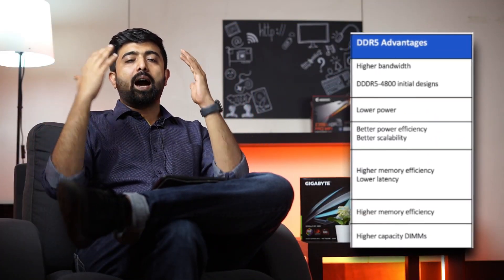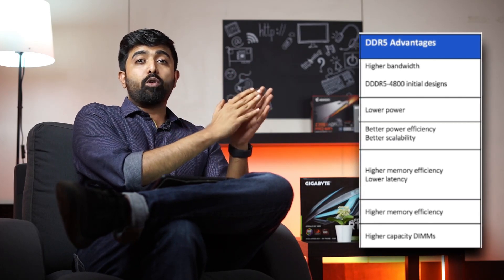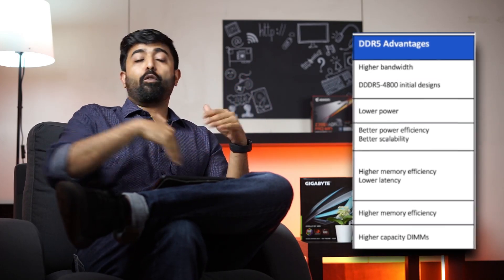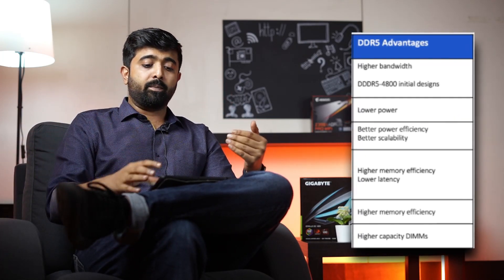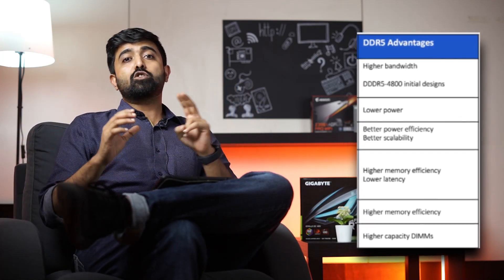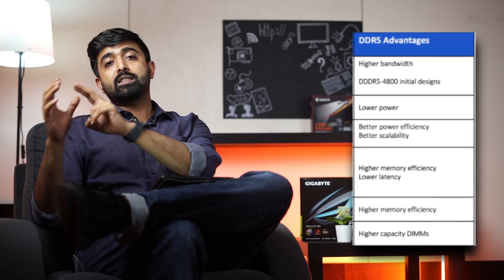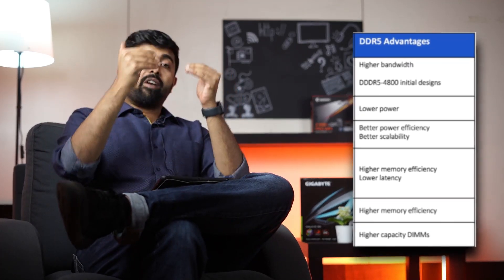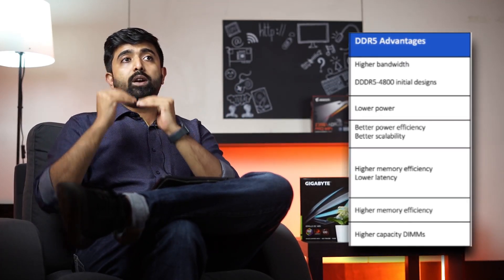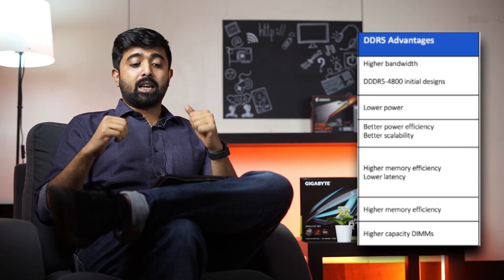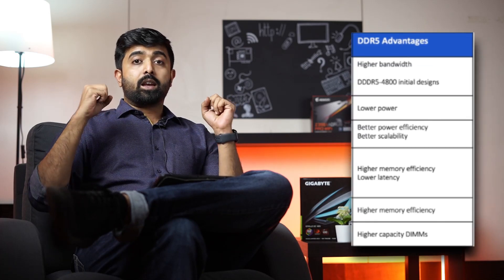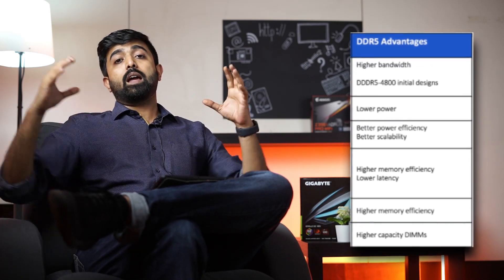Now let's talk about the amazing updates you're gonna be getting with DDR5. First up is extremely high bandwidth — up to 6.4 Gbps — and of course higher clock rates. Number two: DDR5 is going to work on a lower voltage, which means power consumption is going to be less and it will be more efficient.